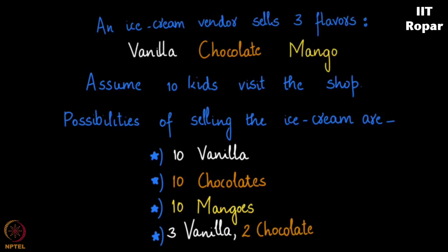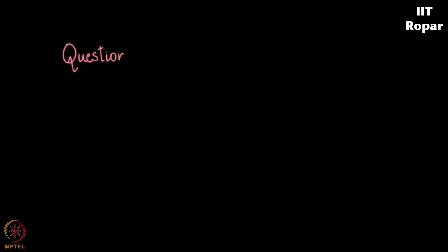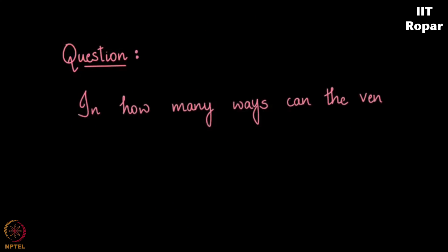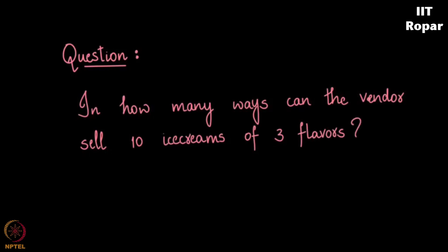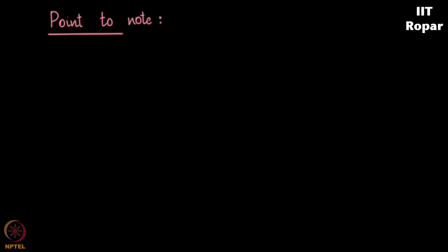two chocolate and five mango flavour ice creams. Now our question is: in how many ways can this vendor sell ten ice creams with three flavours? A point to note is there is actually a possibility of confusion here.